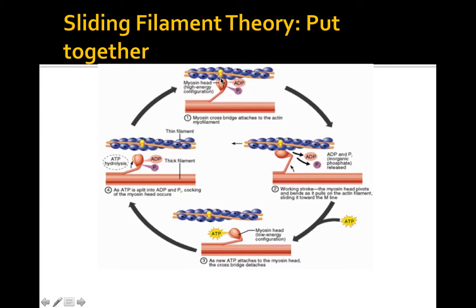Once it binds to the actin, there's a power stroke that occurs which actually causes the muscle contraction. In order for the myosin globular head to detach, ATP comes back into circulation, allows this detachment to occur, and the muscle comes back down to rest to do it all again.